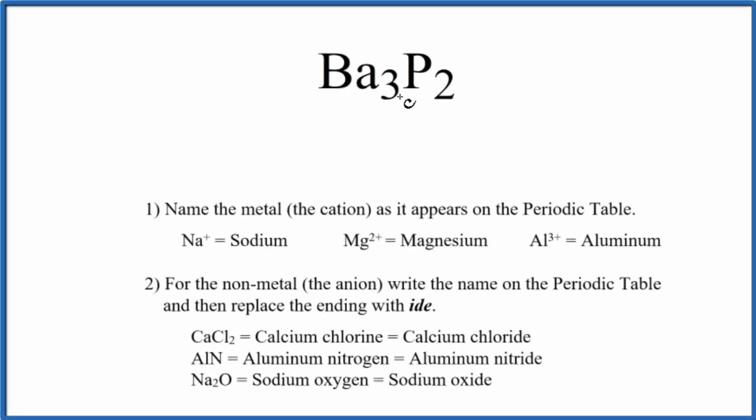To write the name for Ba3P2, we first need to recognize that barium, that's a metal, and then phosphorus, that's a nonmetal. Metal and a nonmetal, we have an ionic compound, and we can use these rules to write the name for Ba3P2.